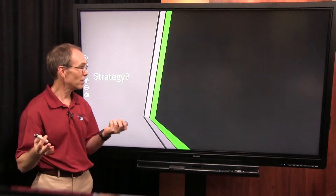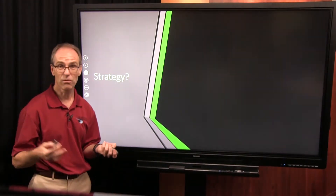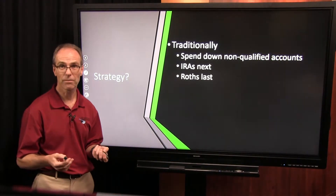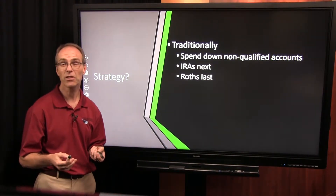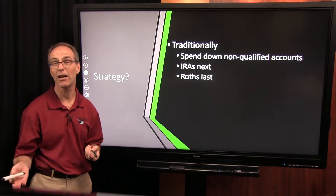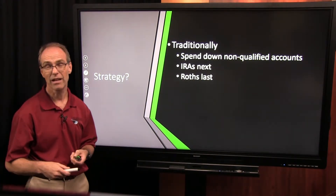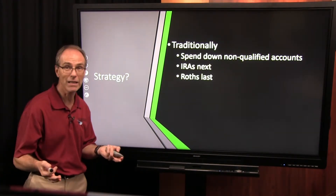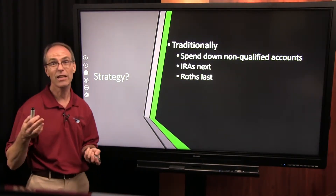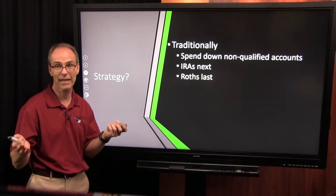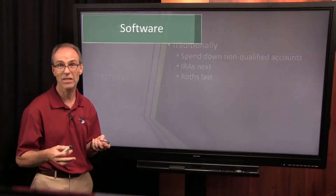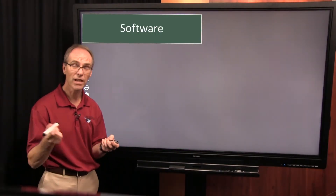Now what might be the strategy that you'll use? Well, traditionally you might spend down non-qualified accounts first. IRAs might be next, and then Roths dead last, because they're the most tax efficient.